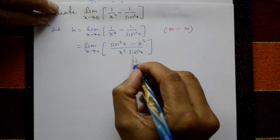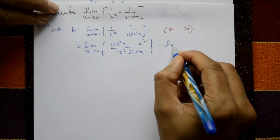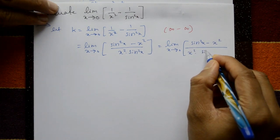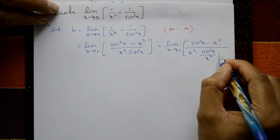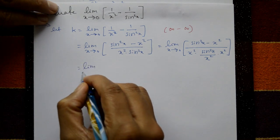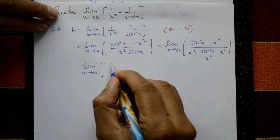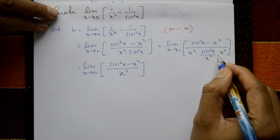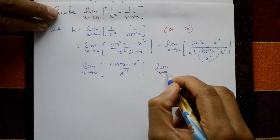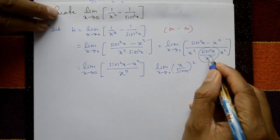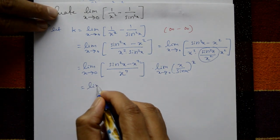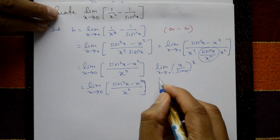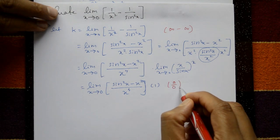Dividing and multiplying by x²: this equals limit x tends to 0 of (sin²x minus x²) / x⁴ times limit of (x/sin x)². The second limit equals 1, so we need limit x tends to 0 of (sin²x minus x²) / x⁴, which is 0/0 form.